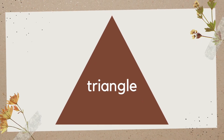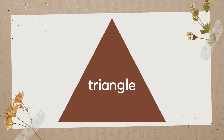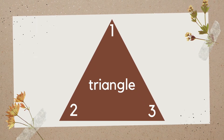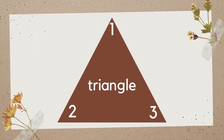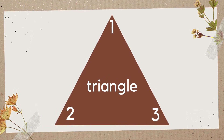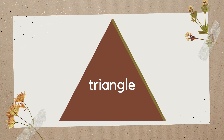Triangle. A triangle has three corners. A triangle has one, two, three sides. On this triangle they're all the same.